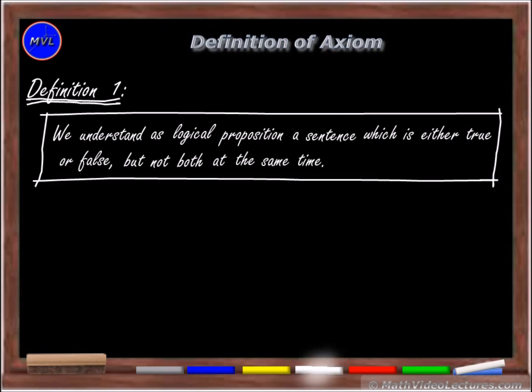Now, it is important to note that some propositions need to be proven first before they can be accepted as true, while others are so obvious that can be assumed as true without any proof. We'll take, for the time being, the following definition of axiom.